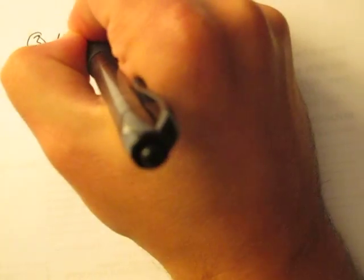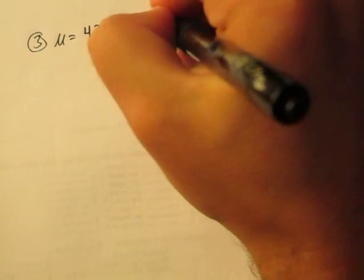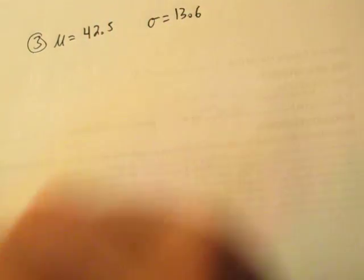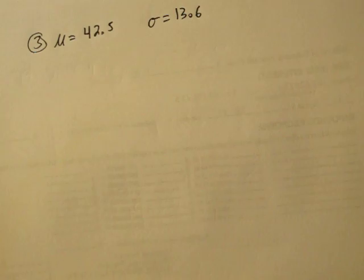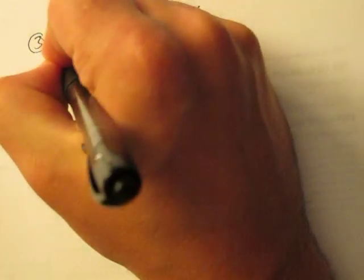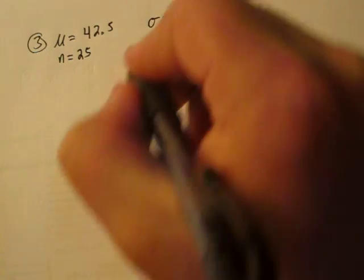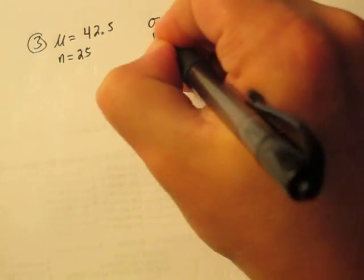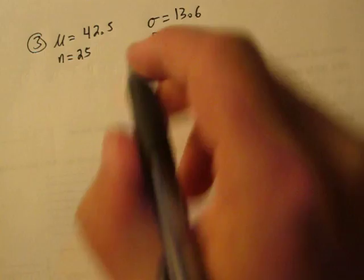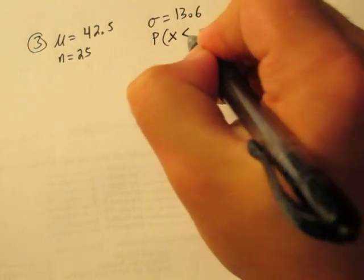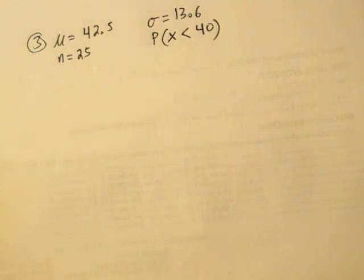Problem 3 is a pretty basic problem. We're told that the true mean is 42.5 and the standard deviation is 13.6. They're saying what's the probability that 25 fish will have a sample mean of 40? So we're interested in the probability that x will be less than 40 in this particular problem.